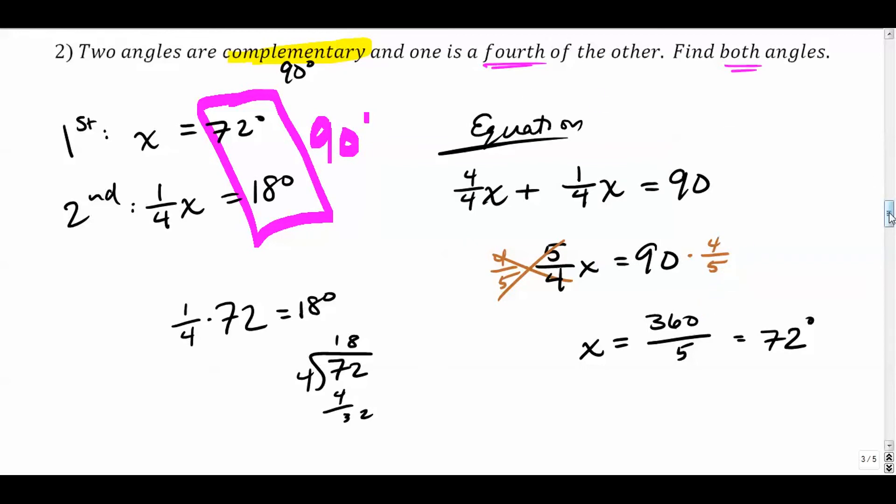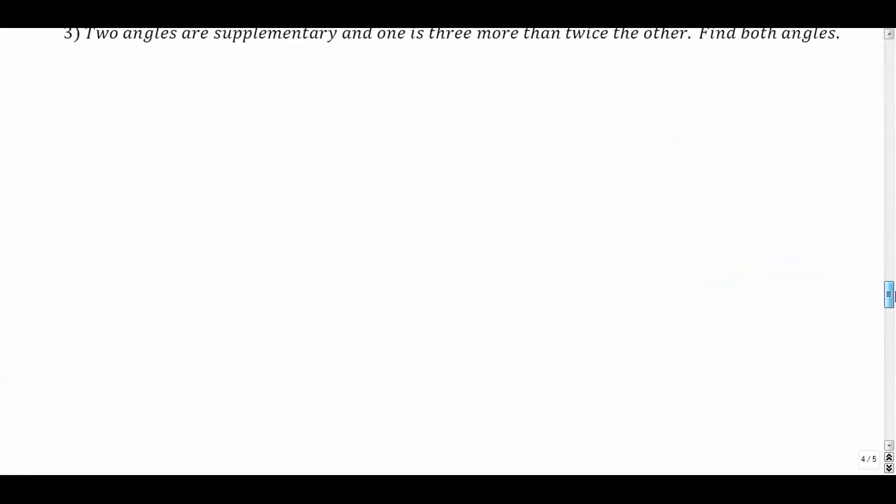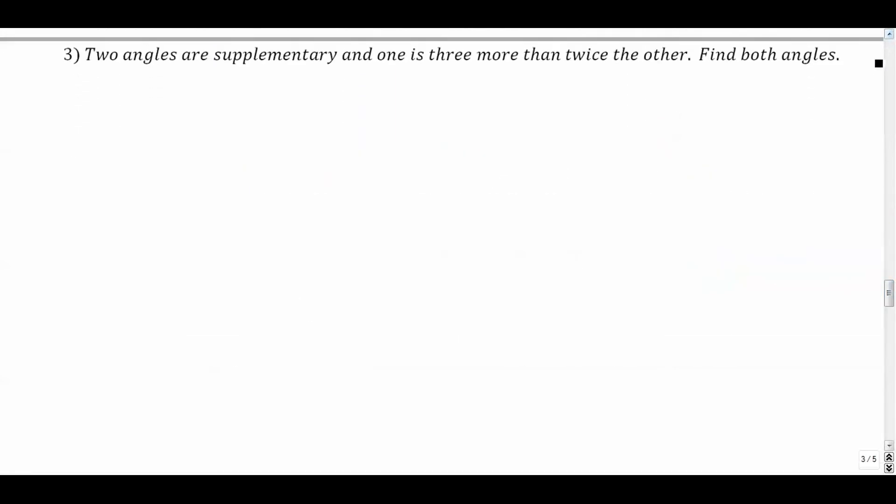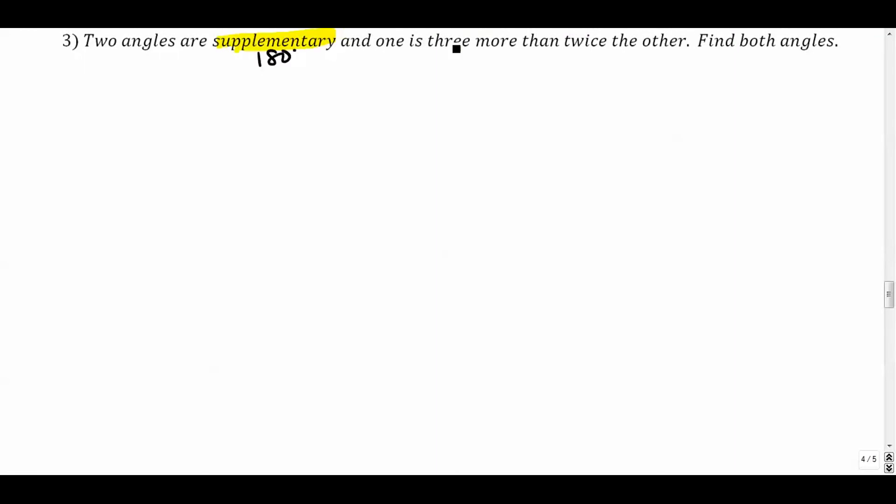So there you go. Step it up a little bit. Number three: two angles are supplementary, and one is three more than twice the other. All right, so let's get our highlighter out here. I'm going to highlight this word supplementary, that's 180. Three more than twice the other, find both.